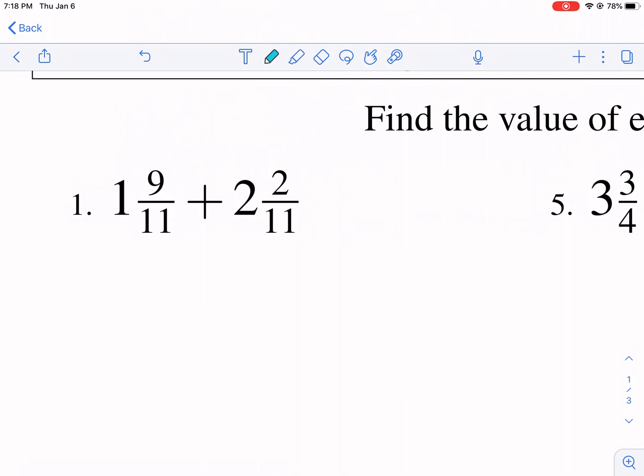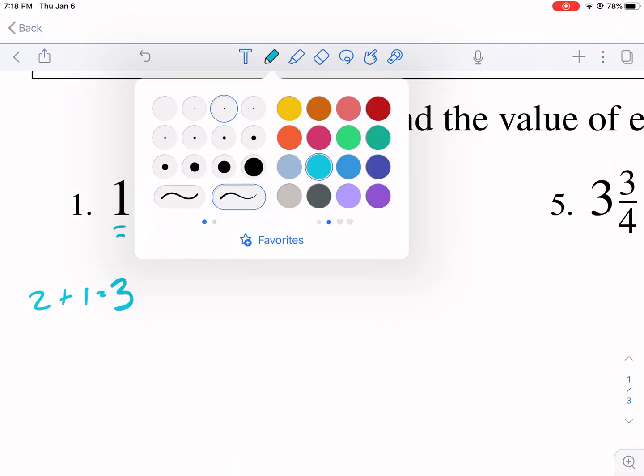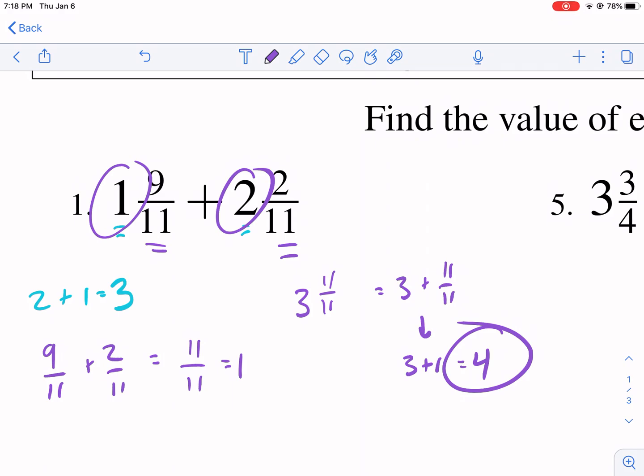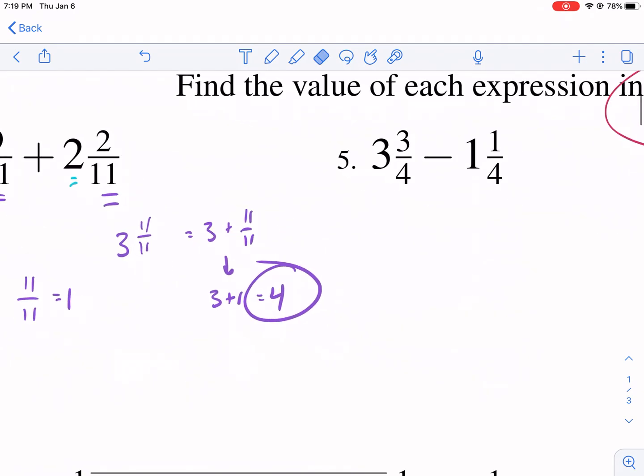So with number one, we have the whole numbers out in front first. So we're gonna do two plus one, and that's three. Now, with the fraction portion of this, I have nine over 11 plus two over 11. Well, our denominator is going to stay the same, and then nine plus two is 11. Now, I'm not going to write three and 11 11ths, because no one ever says 11 11ths, because it's equal to one. So essentially, what I have going on here is I have three and 11 11ths, which is three plus one. So my final answer is actually four. So we had one here, we had two here, that's three wholes. And then nine 11ths plus two 11ths is another whole, which is four.